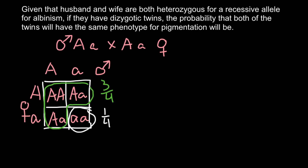The question is: what is the probability that both twins would be of the same phenotype? The probability that the first child would be phenotypically normal is three quarters, and the probability that the second child would also be phenotypically normal is also three quarters. We multiply these two probabilities, giving us nine out of sixteen.